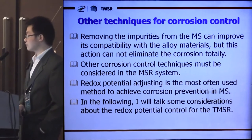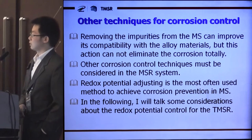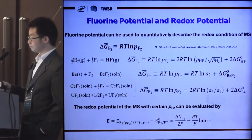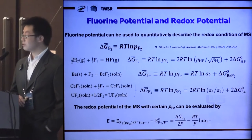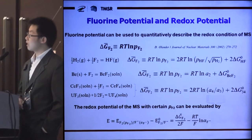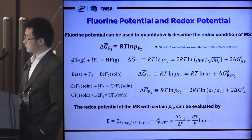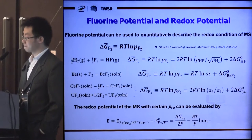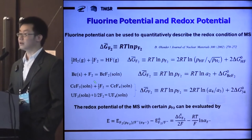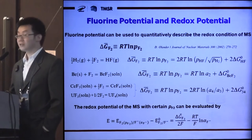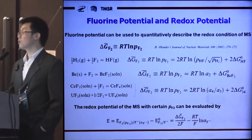Redox potential adjusting is the most commonly used method to achieve corrosion prevention in molten salts. I will discuss considerations about redox potential control for the TMSR. Fluorine potential can be used to quantitatively describe the redox condition of the molten salts, where pF2 means the partial pressure of the fluorine gas in the molten salt system. The fluorine potential can be controlled by at least three methods according to Olander: by using gases, metals, or dissolvable redox couples.